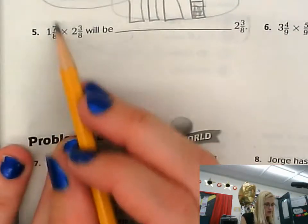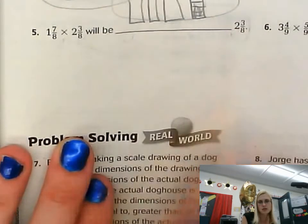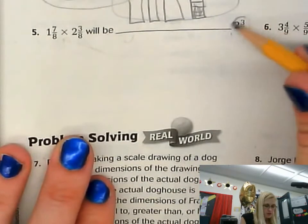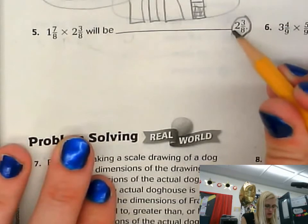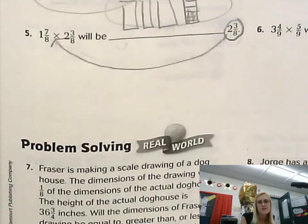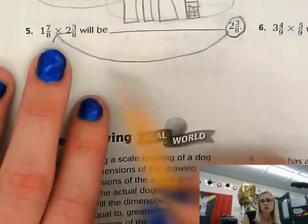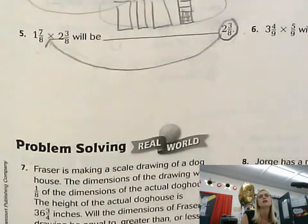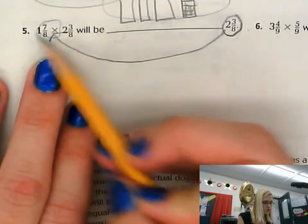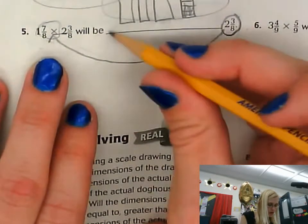Now let's look at it abstractly. I have 1 and 7/8ths times 2 and 3/8ths — will the product be greater than or less than 2 and 3/8ths? The given factor is 2 and 3/8ths, and I'm comparing against 1 and 7/8ths. Since 1 and 7/8ths is greater than 1, I'll have 2 and 3/8ths one time and then multiply again by 7/8ths, so it's actually getting larger. My product is going to be greater than 2 and 3/8ths.